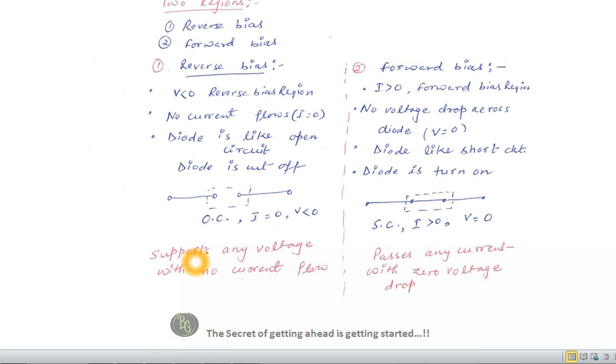In reverse bias, the diode supports any voltage with no current flow but in the forward bias, diode passes any current with 0 voltage drop.